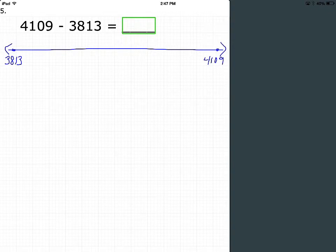So from 3,813, I'll take a jump of 7 to 3,820, and then 80 more to 3,900, and then 100 more to 4,000.